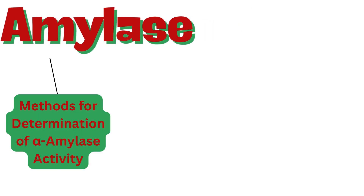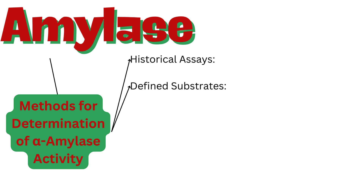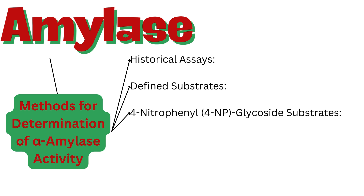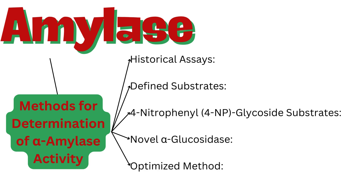Various methods exist for measuring AMY activity. Historical assays — saccharogenic, amyloclastic, and chromolytic starch methods — have been replaced by defined substrates. Small oligosaccharides like maltopentaose and maltotetraose yield stable hydrolysis products. 4-Nitrophenyl (4NP) glycoside substrates: 4NP is bonded to oligosaccharides, and AMY hydrolyzes these to produce measurable products. PAMY hydrolyzes these substrates faster than SAMY. Stability issues have been addressed with blocking groups like ethylidene. Recombinant enzyme AGH-211 hydrolyzes nitrophenylated substrates completely, improving reaction stoichiometry. The IFCC recommends a reference measurement procedure for AMY at 37°C.